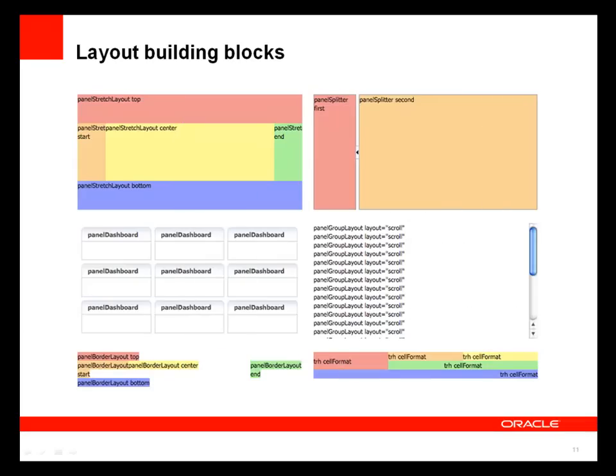After using the placeholder data control to create sample data, the next step is to use the JDeveloper IDE to create your layout. The building blocks of a layout include various components. The panel stretch layout is a stretched frame with top, center, start, end, and bottom facets — the center facet stretches to fill the available space. If there's nothing in a facet it won't display, so if something is in the center facet it will stretch to fill all available space within its container — if it's the outermost container, it stretches to fill the entire browser.